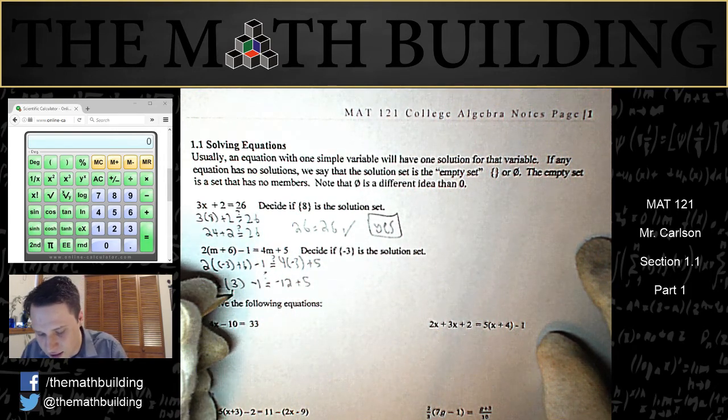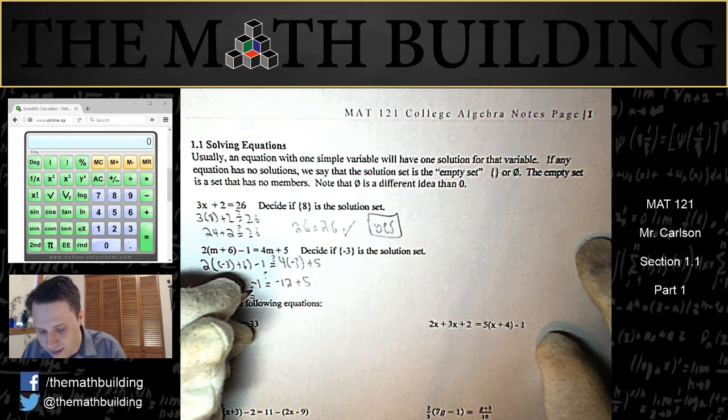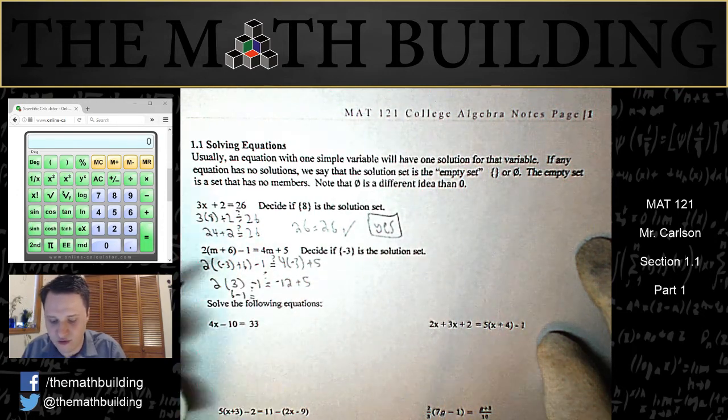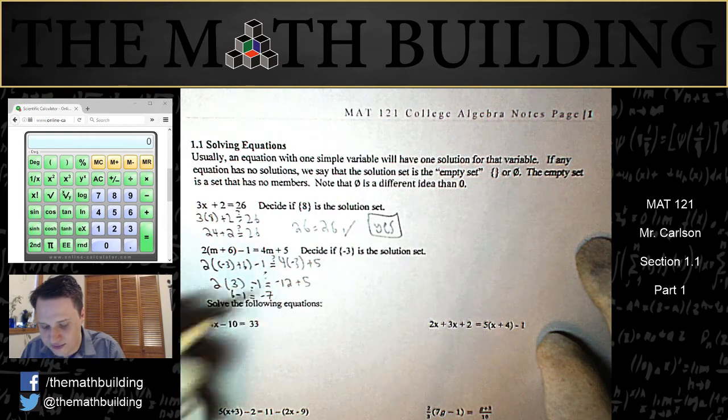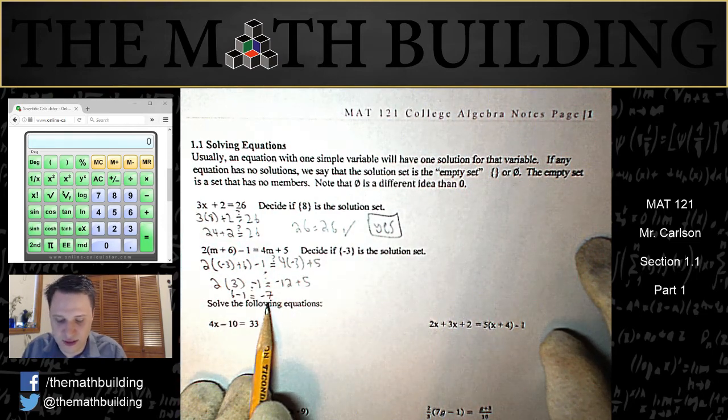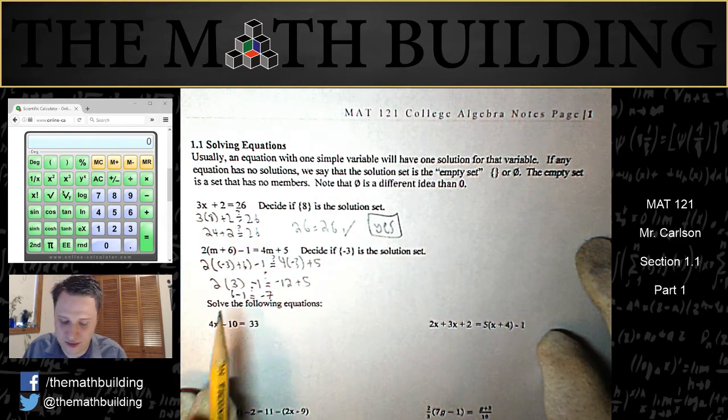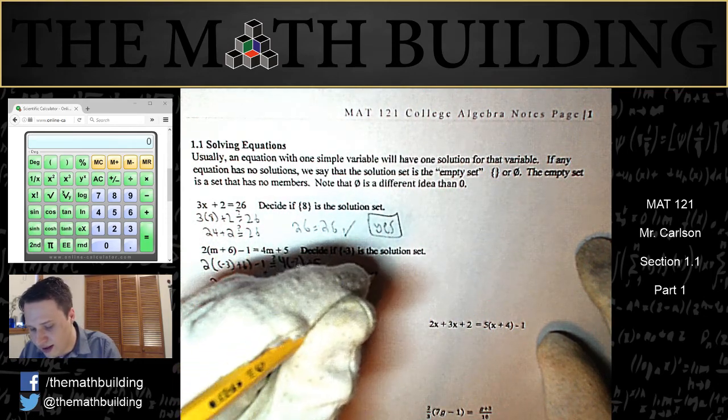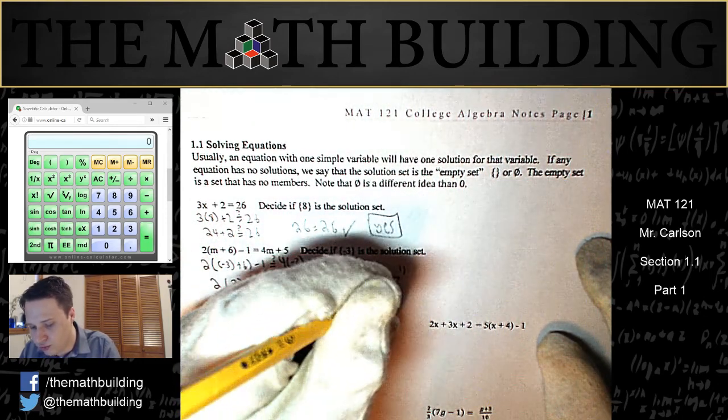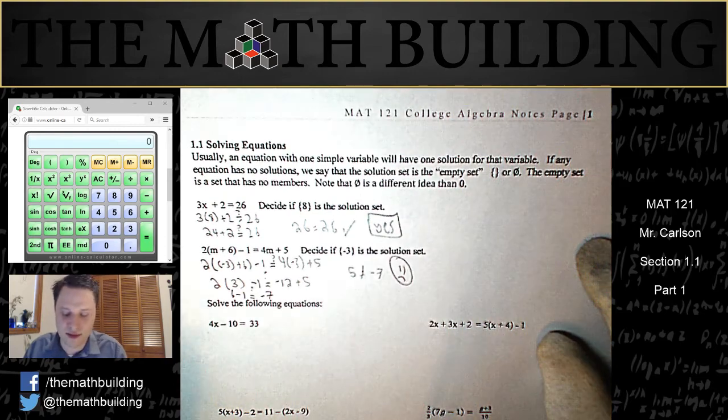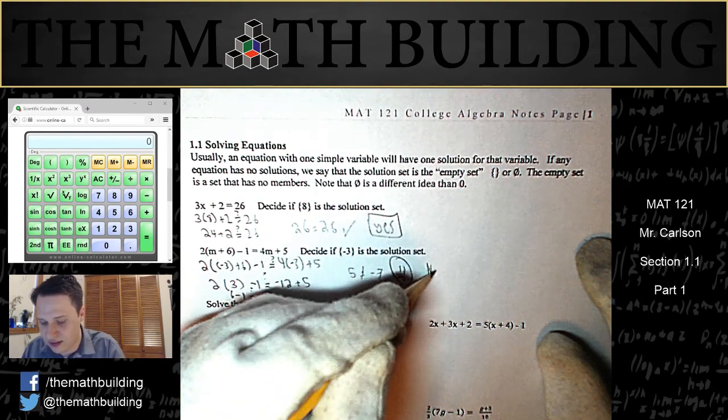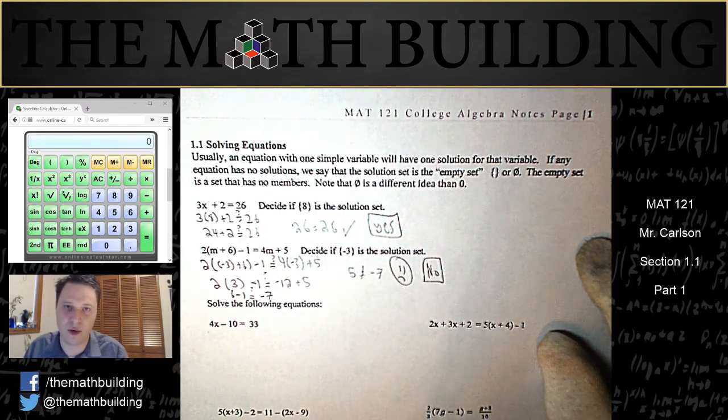Let's keep going. 2 times 3 is 6, so on the left I have 6 minus 1 is maybe equal to negative 12 plus 5, which is equal to negative 7. It's quite clear that this isn't going to be the same on both sides. 6 minus 1 is 5, so we get 5 is equal to negative 7, which is not true. That means that no, negative 3 is not the solution set to this equation.